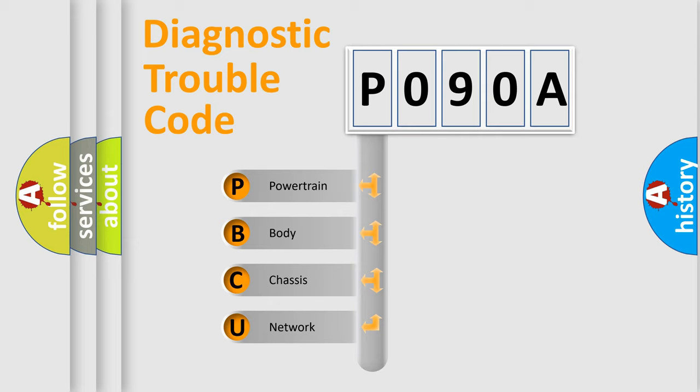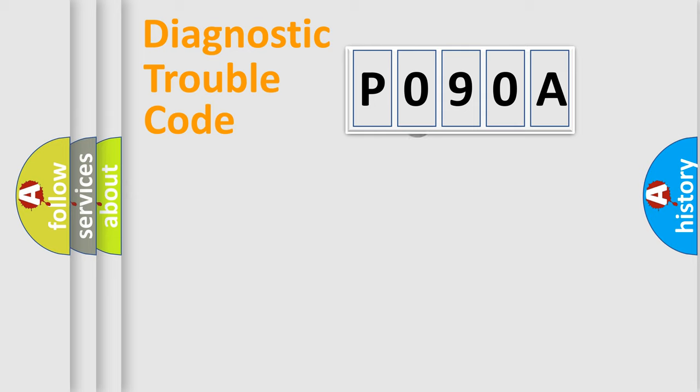We divide the electric system of automobile into four basic units: Powertrain, Body, Chassis, and Network. This distribution is defined in the first character code.